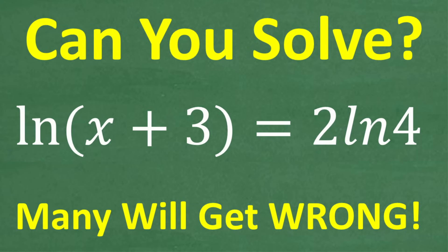If you have a basic understanding of logarithms, this should be a very easy problem for you to solve. What we have here is an equation: ln(x+3) is equal to 2 times ln(4). You need to know a thing or two about logarithms — this is a topic typically taught in courses like Algebra 2, College Algebra, or Pre-Calculus. If you haven't reached this level yet, you probably haven't learned how to solve logarithmic equations. But stick with me for a few minutes — this is not that difficult.